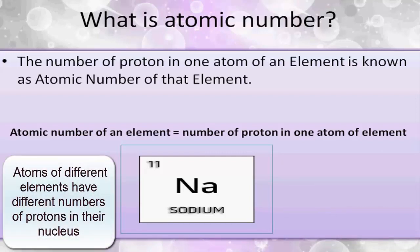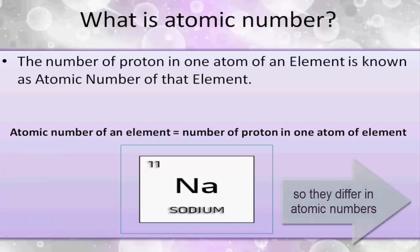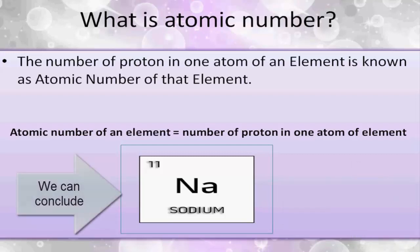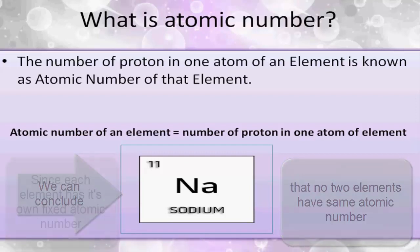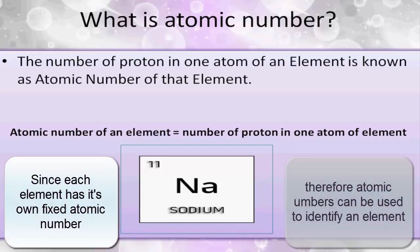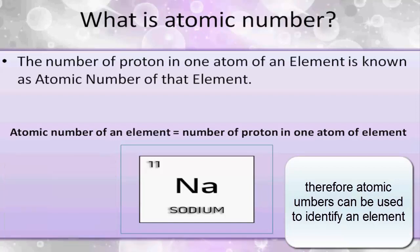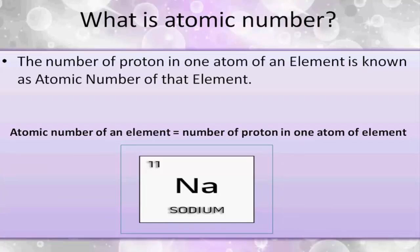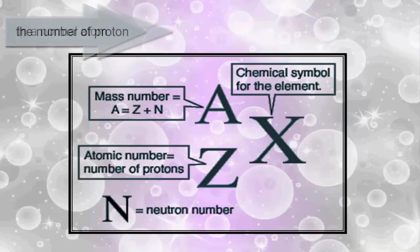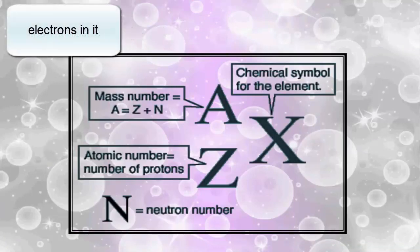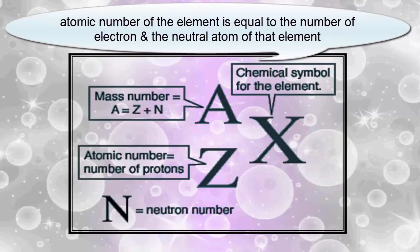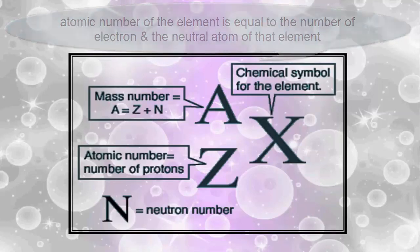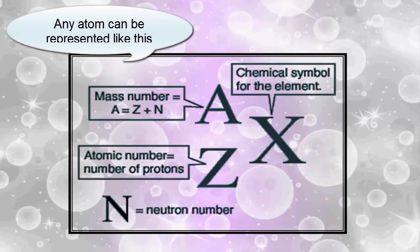Atoms of different elements have different numbers of protons in the nucleus, so they differ in their atomic numbers. By this we can say that no two elements have the same atomic number since each element has its own fixed atomic number. Therefore, atomic number can be used to identify an element. In a normal atom, the number of protons is equal to the number of electrons in it, so we can say that the atomic number of the element is equal to the number of electrons in the neutral atom of that element.